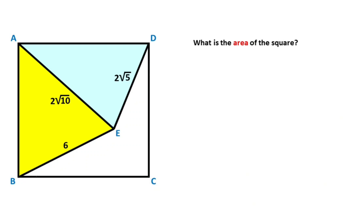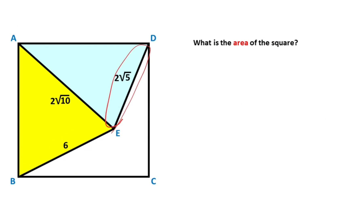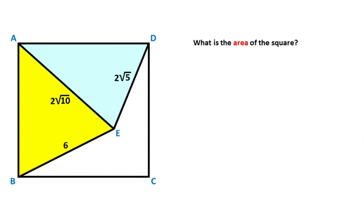Hello everyone. In this video we have one square and this length is given as 6, this length is given as 2√5, and this length is given as 2√10. The question is: what is the area of the square? First of all, let's call one side of the square x units, and let's call this angle alpha — that means this other angle must be equal to 90 minus alpha.